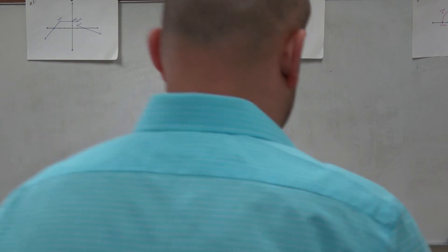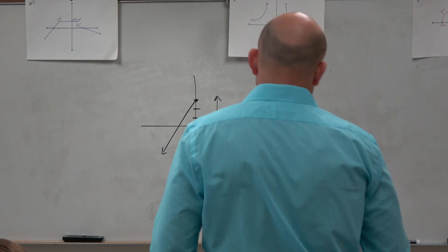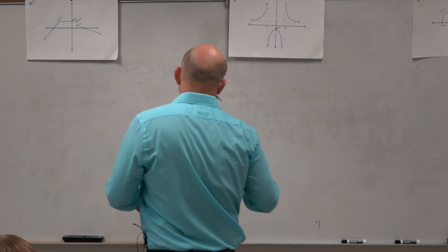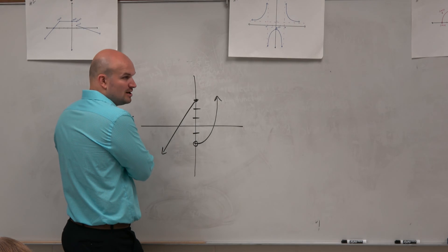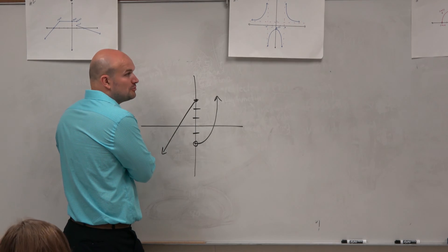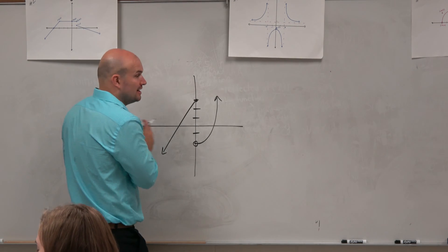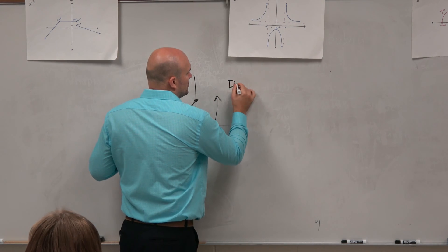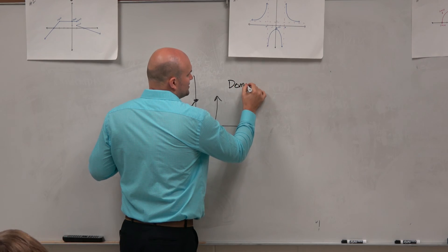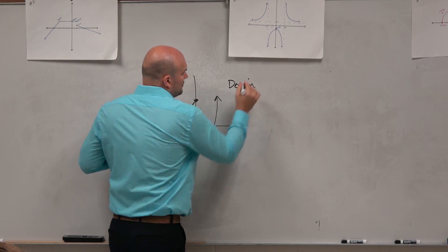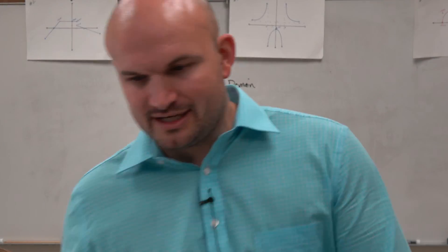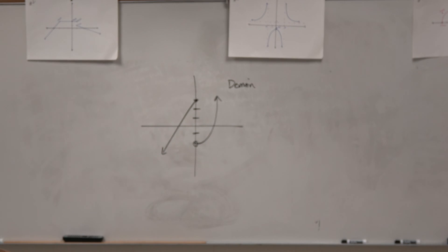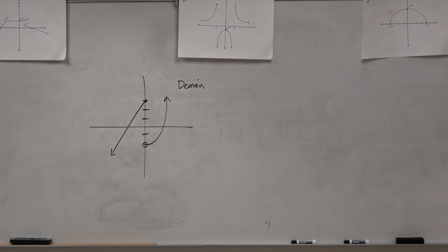In this example, there are a couple things we want to look at. The first thing is domain and range. If I'm going to look at the domain, the domain from the graph is basically asking us what is the set of all x values where the graph is defined.